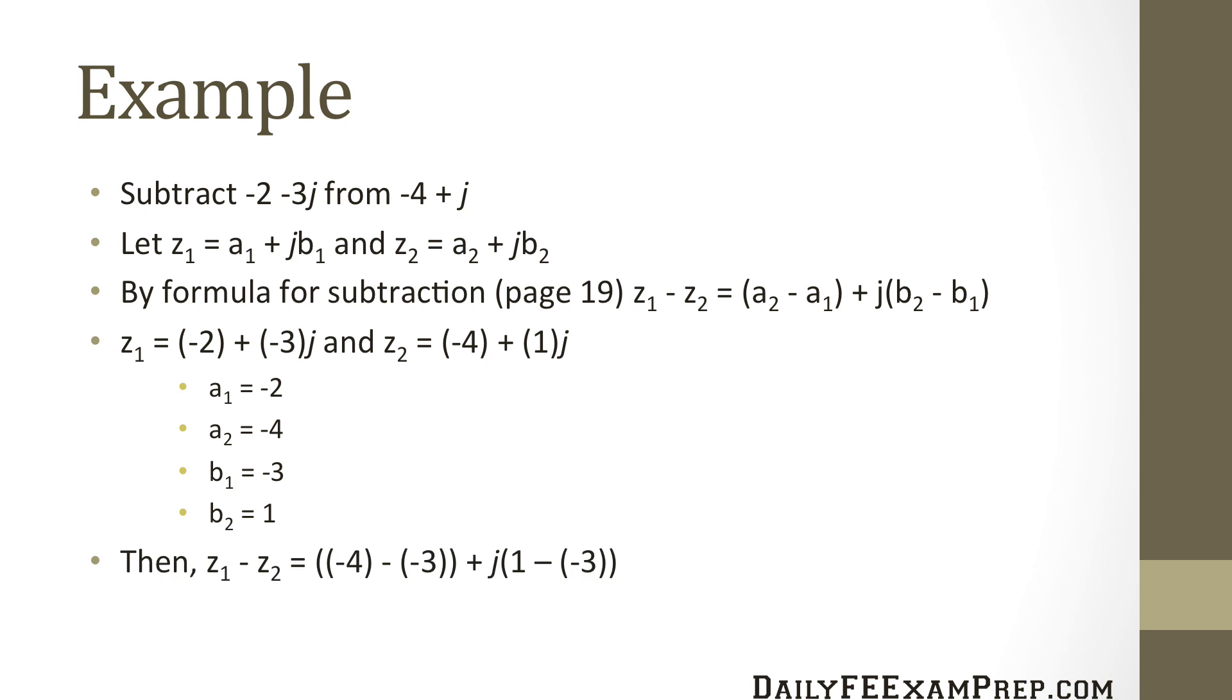So what that gives us is z1 minus z2 equals minus 4 minus minus 3 plus j times 1 minus minus 3 which gives us minus 2 plus 4j.